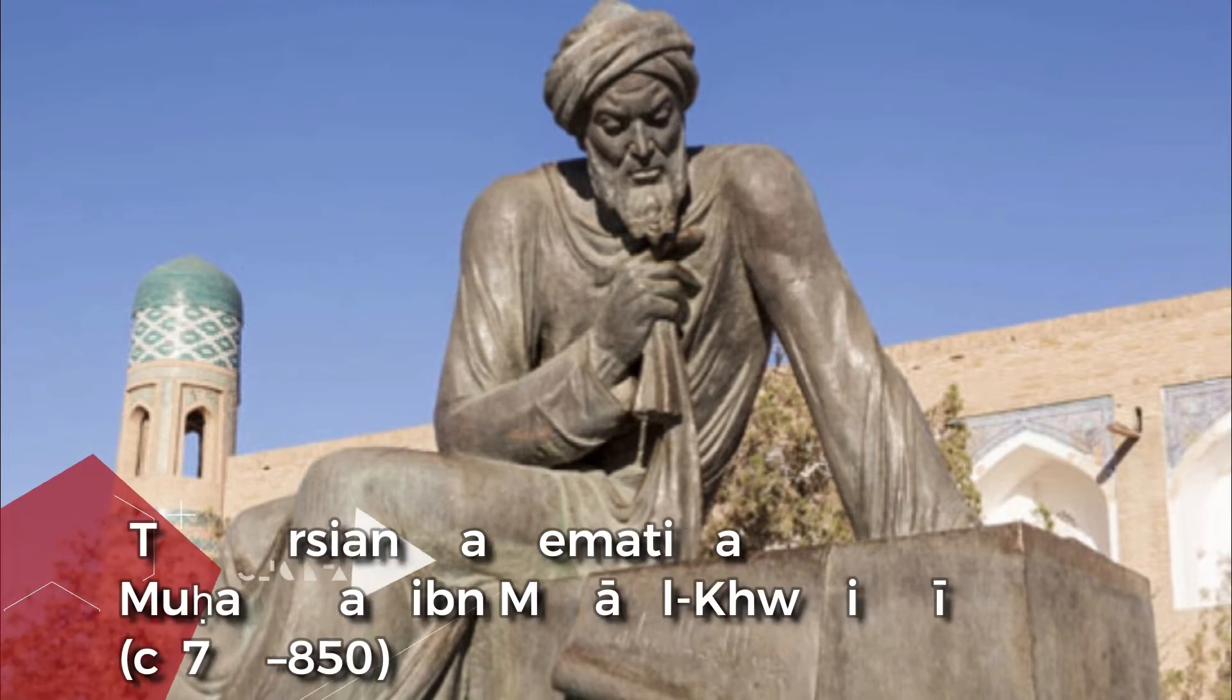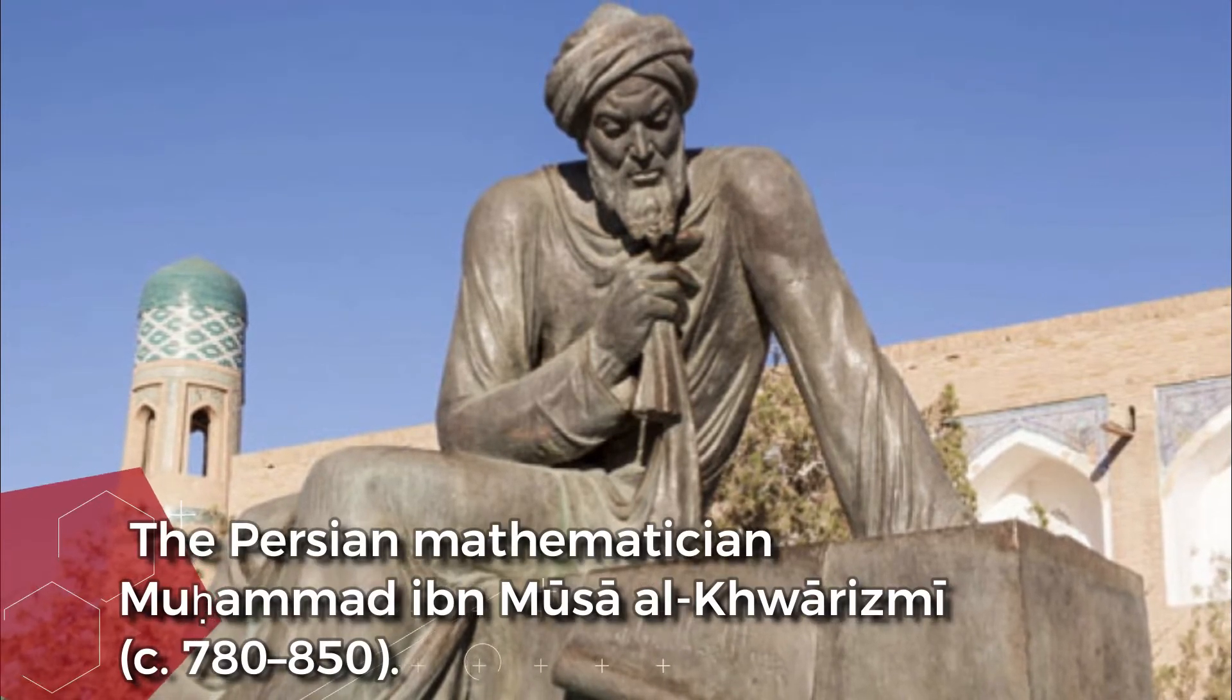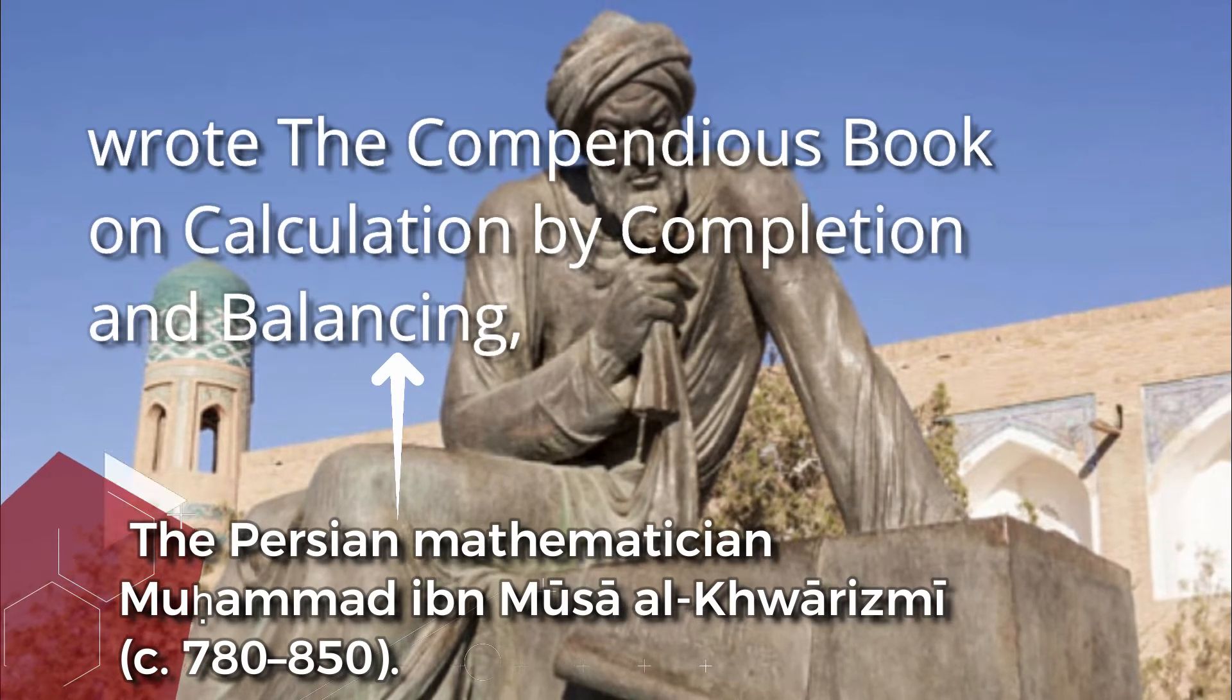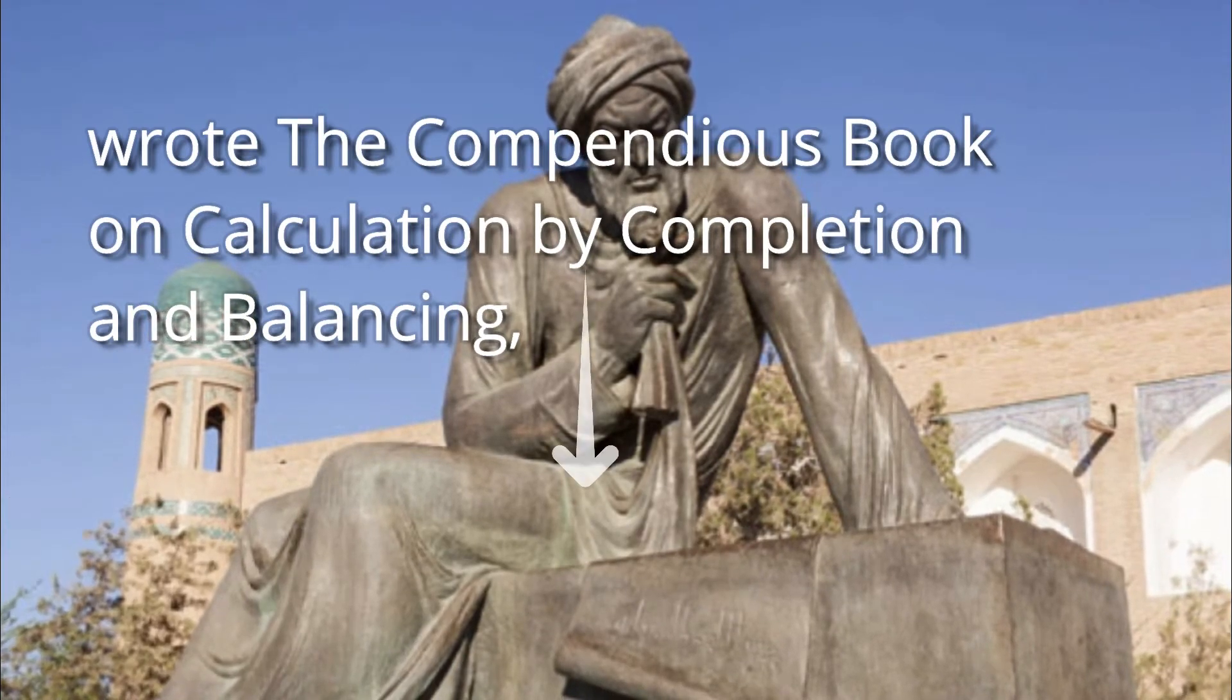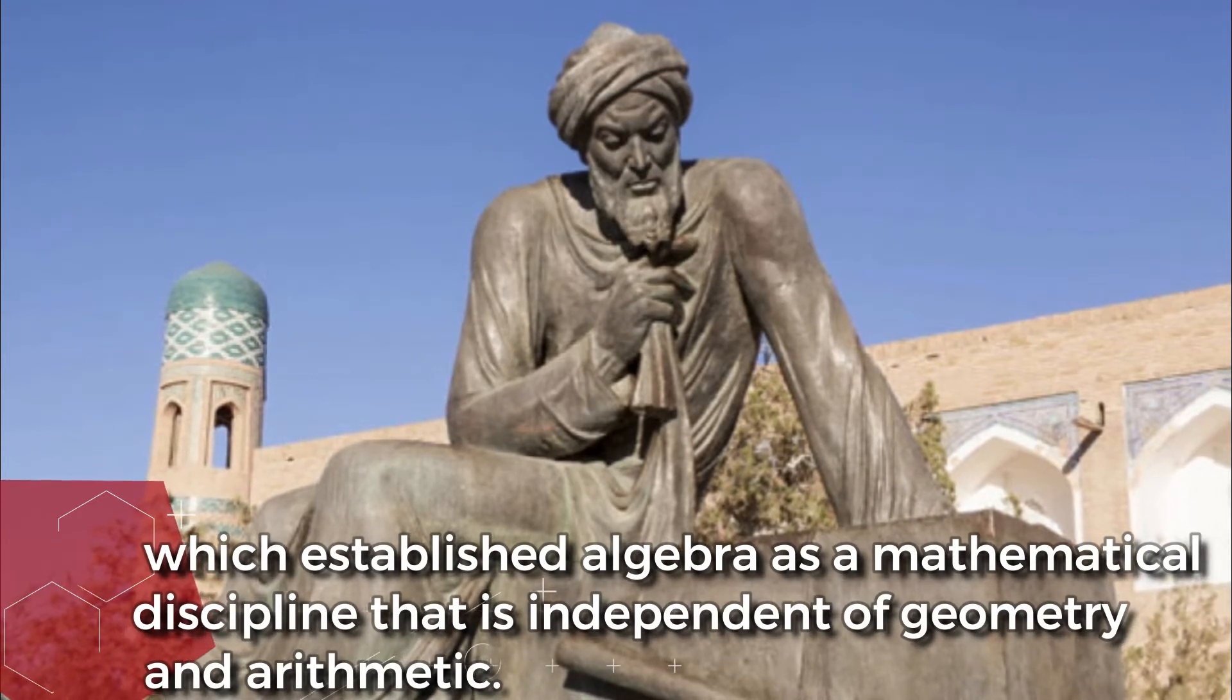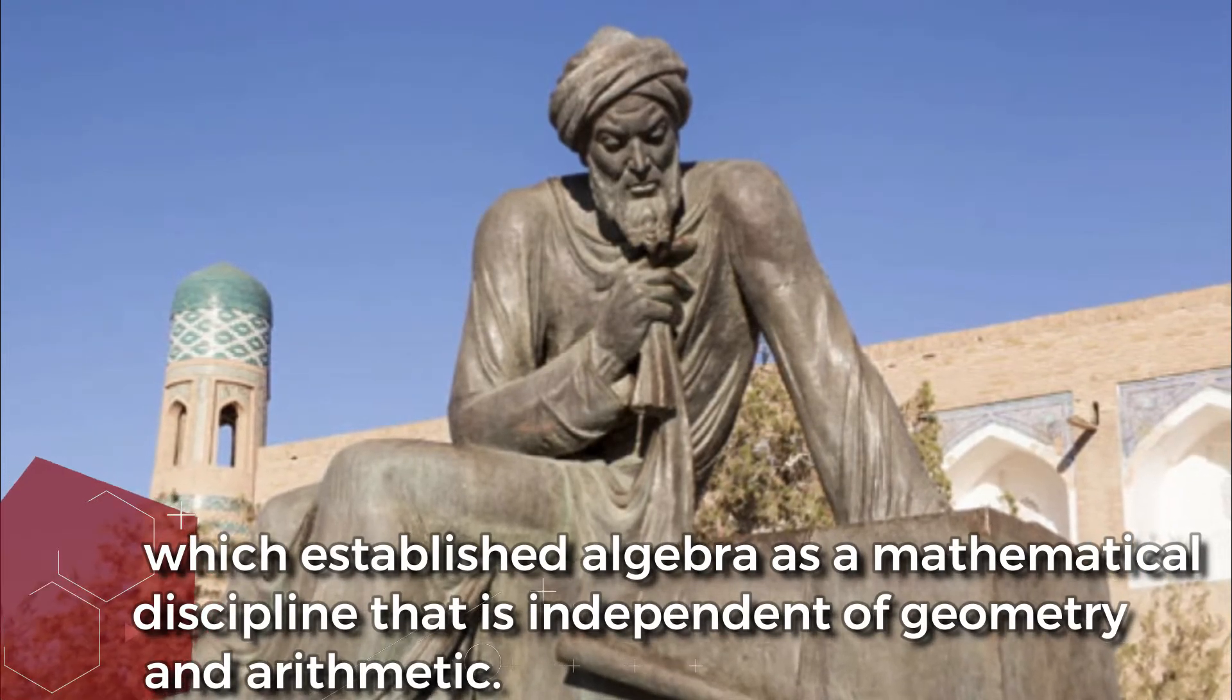The Persian mathematician Muhammad ibn Musa Al-Khwarizmi wrote the Compendious Book on Calculation by Completion and Balancing, which established algebra as a mathematical discipline that is independent of geometry and arithmetic.